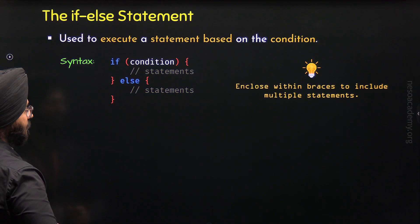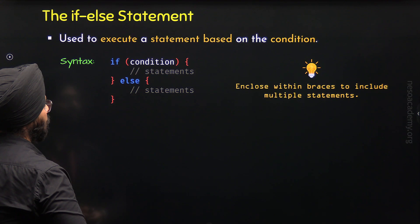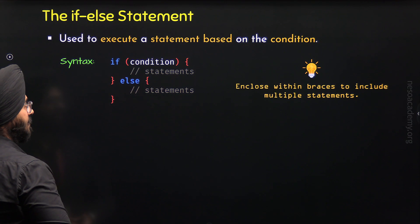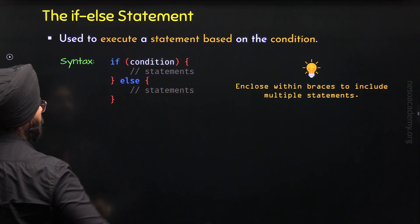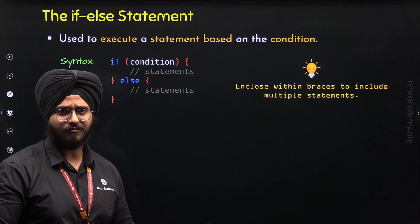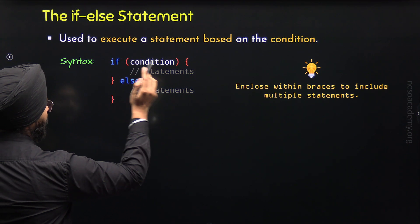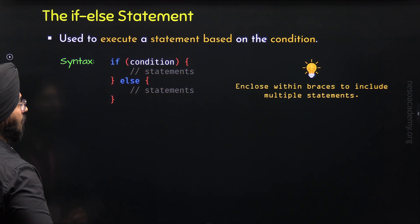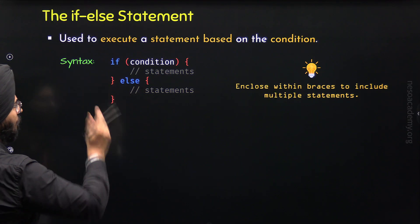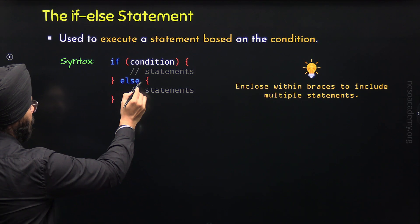So the syntax looks like this. If we want to include multiple statements inside IF and ELSE, then we need to put them within braces. Within these braces, we can specify as many statements as we want. This is one compound statement — it is treated as a single statement. So we are not breaking the rule of IF and ELSE. Inside this IF, we can include as many statements as possible because we are enclosing the statements within braces. Similarly, within ELSE also, we can include as many statements as we want because we are enclosing all the statements within braces.